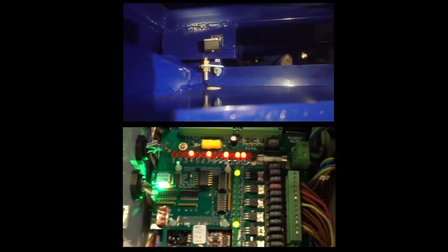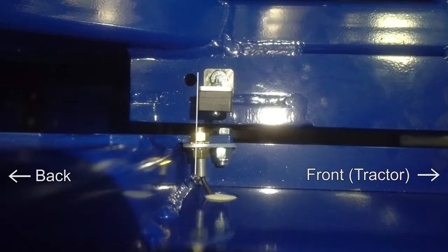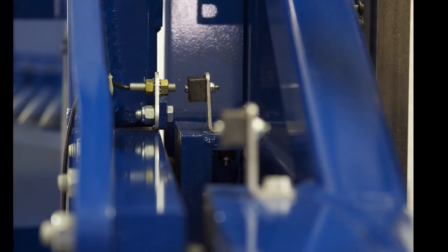This reed switch should line up with the back edge of the stack of magnets located toward the front of the machine. There should be a 3/8 inch air gap between the end of the reed switch and the flat surface of the closest magnet.